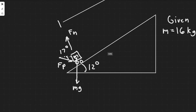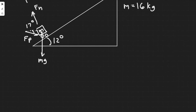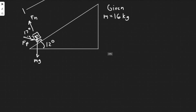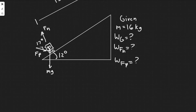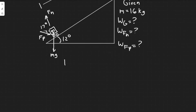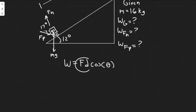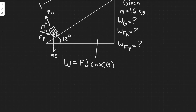We want to find W_g (work due to gravity), W_n (work due to the normal force), and W_fp (work due to the applied force F_p). The formula for work is W = F · d · cos(θ), where θ is the angle between the applied force and the direction of travel.